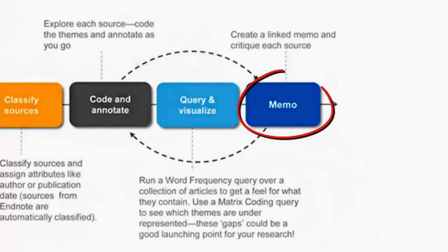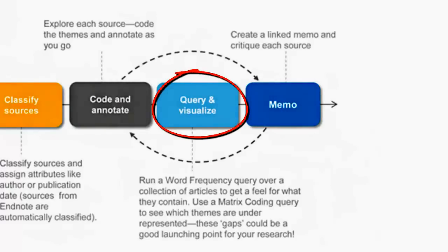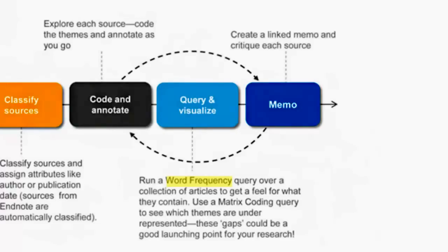Remember you can also annotate as you go — that is, make comments — and create a linked memo where you critique each source you read. Finally, you can run different queries to help you code or to explore relationships about topics. For example, you can run a word frequency query over selected sources to get a feel for what they contain and focus your readings. You can also run a text search query to find relevant content and code it at the same time. Coding queries will find source content relevant to a combination of topics, while a matrix coding query will show you how themes are represented. This will help you compare topics and potentially find gaps in previous research, which will be a good starting point for your own research.